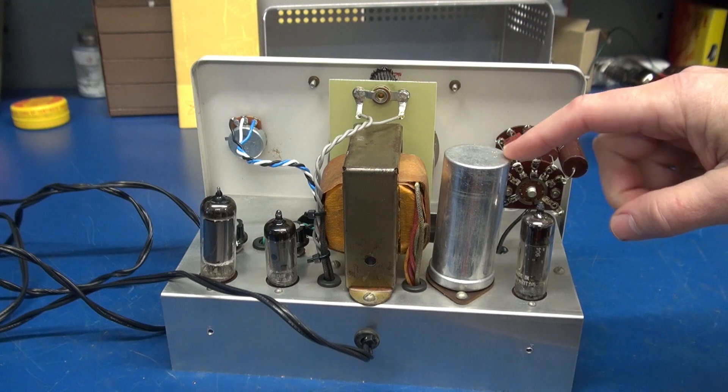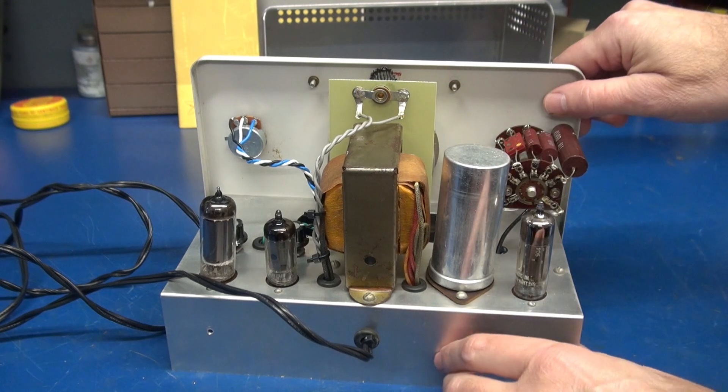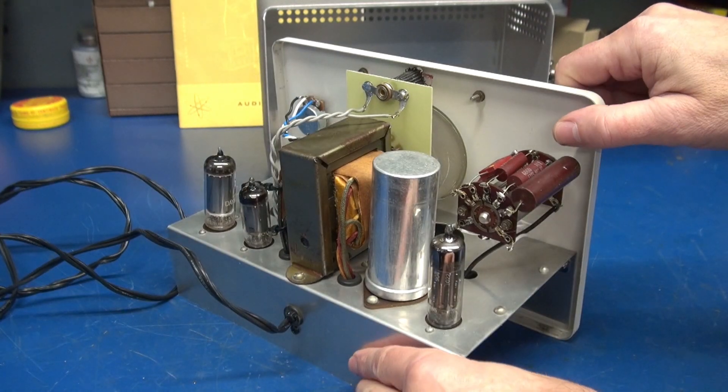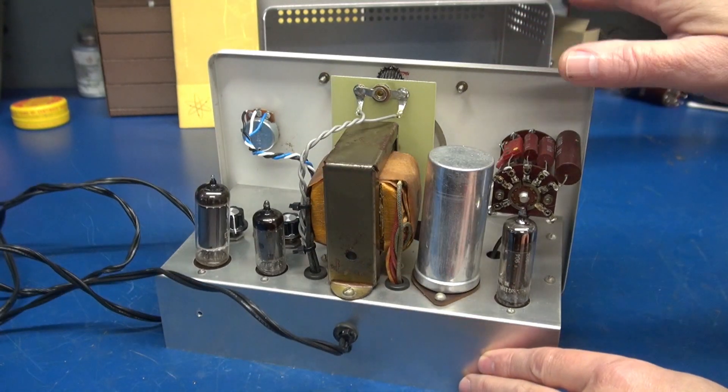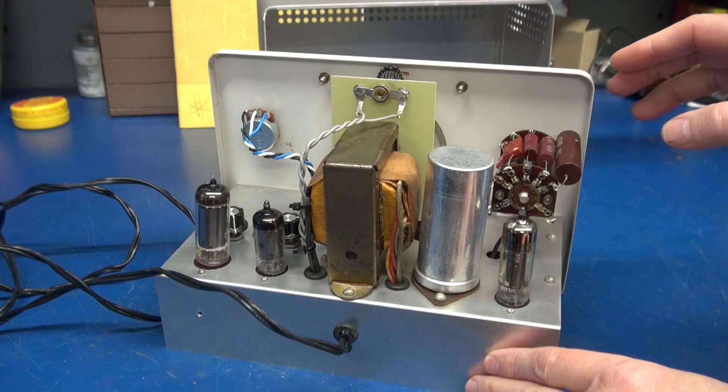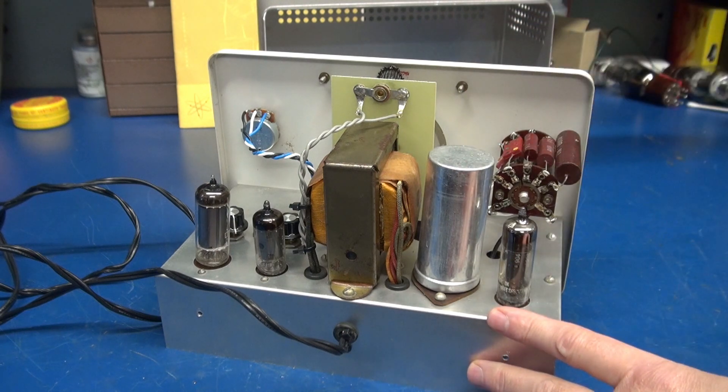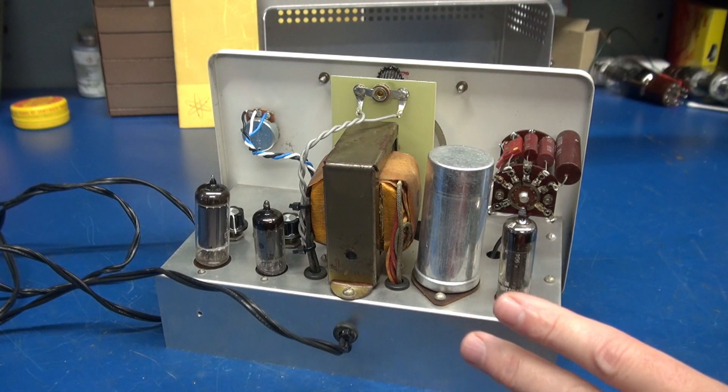This capacitor retails between 45 to 50 dollars for the reproduction can capacitors. You can buy these audio generators for about the same amount of money. So you're going to end up with the same cost of the generator just to change the filter cap. So what is the solution?